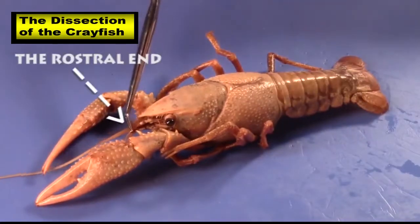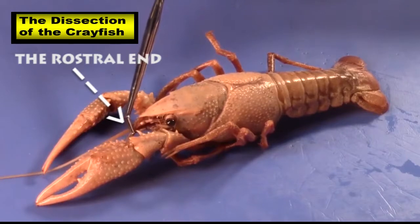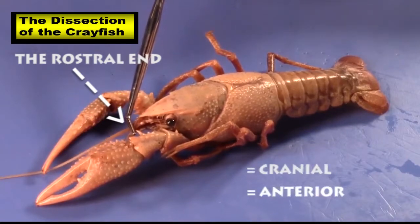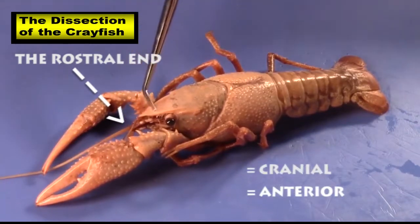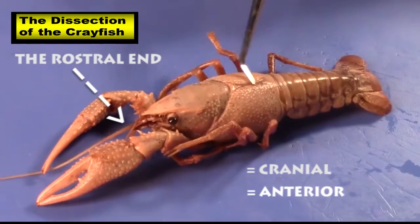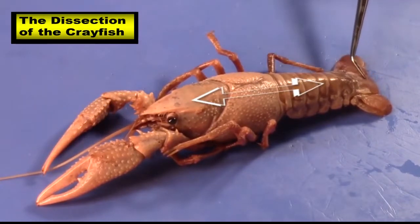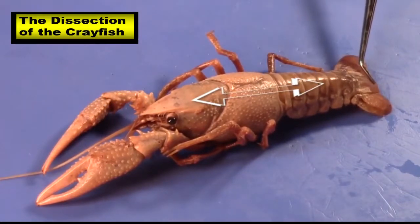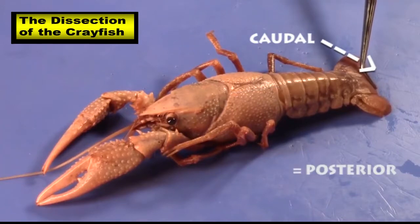Here's the rostral end, so that's going to be near his nose. This also could be called cranial or anterior. Then we're going to go along the longitudinal axis — that's the long axis — all the way down to the flipper. And that's going to be the caudal end, or the posterior end.